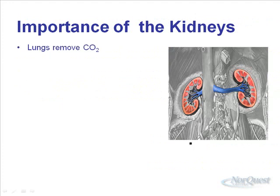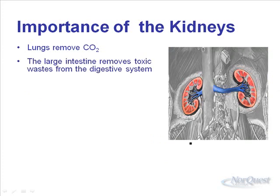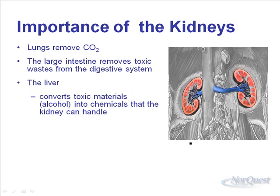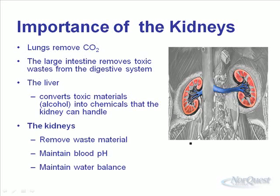For the importance of the kidneys: we know the lungs remove CO2 in respiration, so that gets rid of one waste product. The large intestine removes toxic waste from the digestive system — all that stuff our body can't digest and can't enter our circulation is removed that way. The liver is involved in making chemicals less harmful, dealing with things like alcohol and ammonia, so their concentrations don't get too high in our blood. But once things are in our blood, they have to have some way out — toxic chemicals are going into our blood all the time.